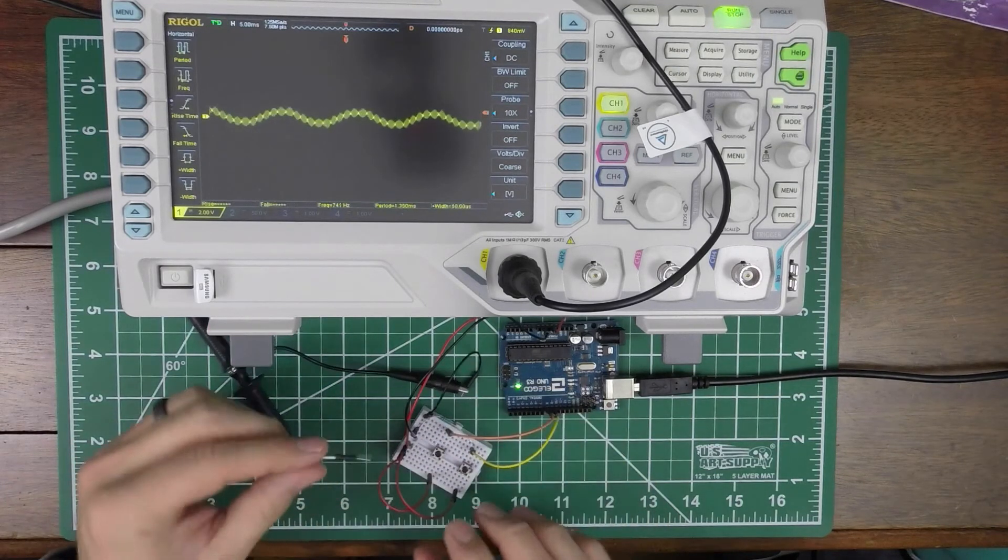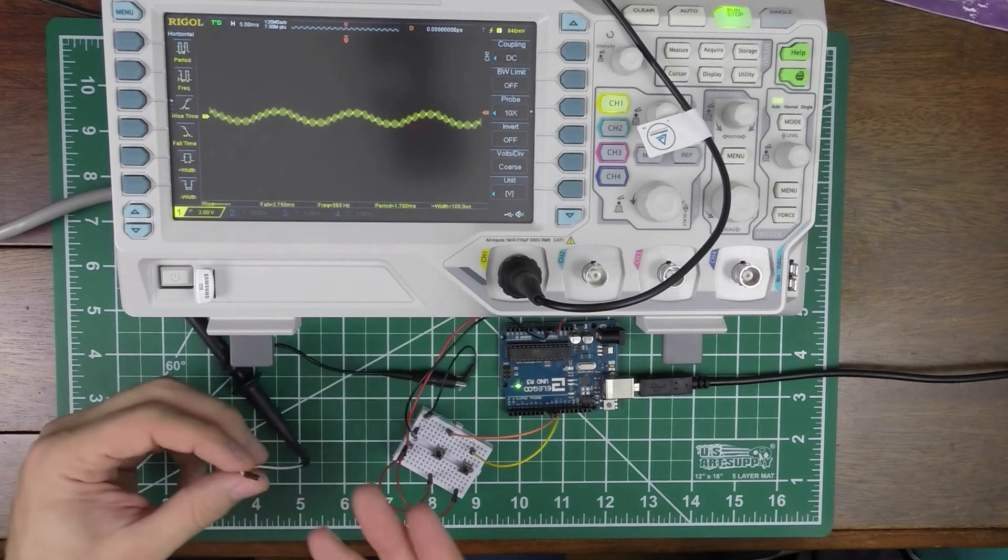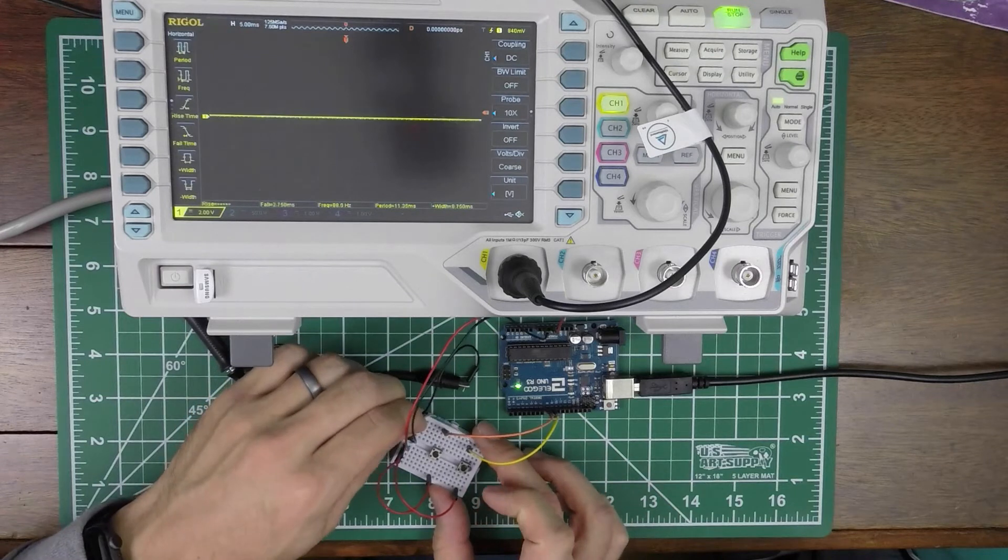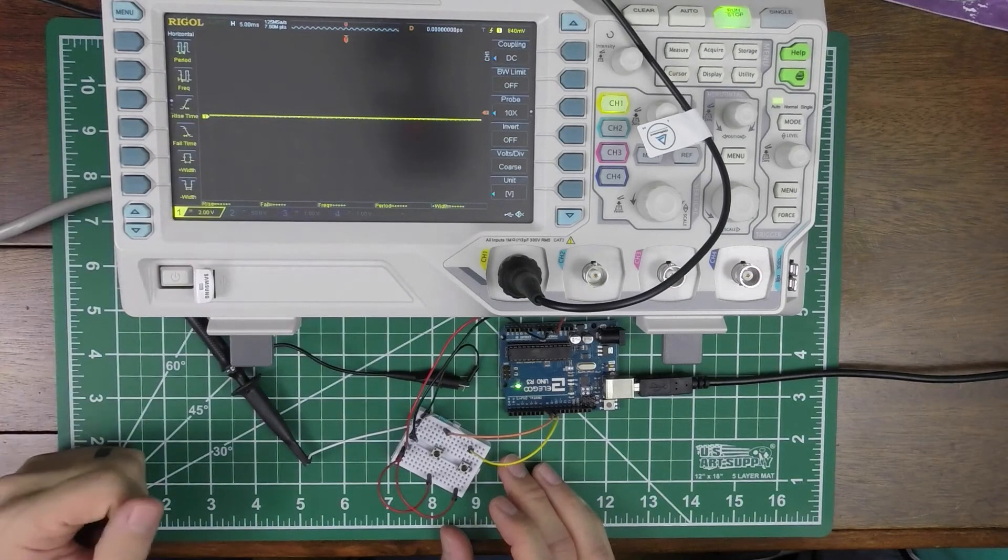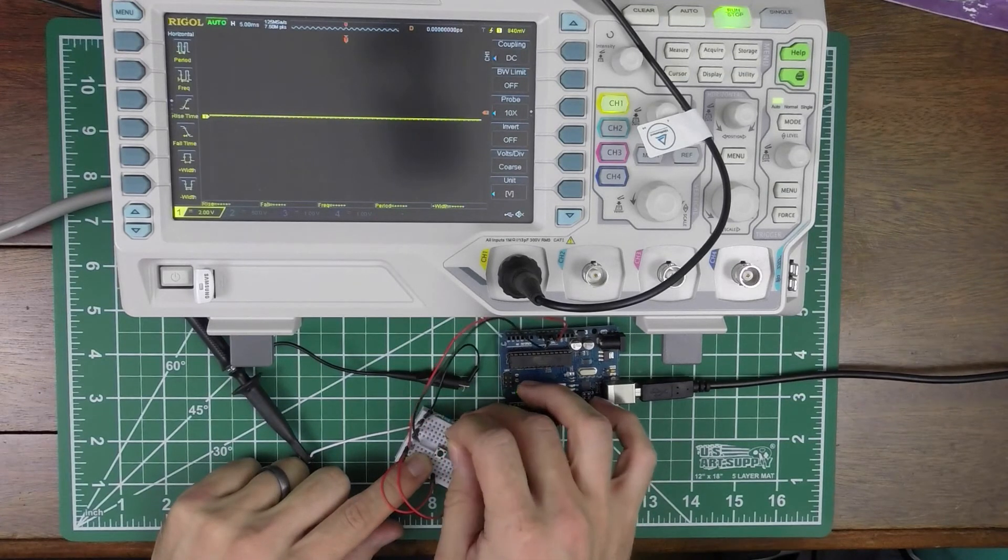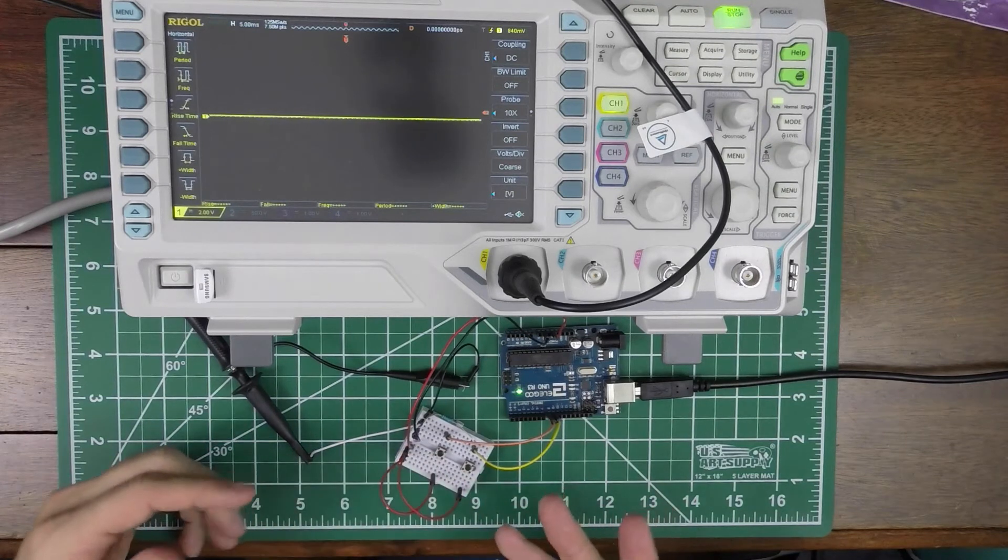Same thing is if I hook this up to ground, and same thing, this is basically acting as an antenna for my oscilloscope as well. When I hook this up to ground, I get a nice, clean signal. But here's the problem, okay, so I can't just hook this up to ground, and then have the button connect power to ground, because that's going to short things out.